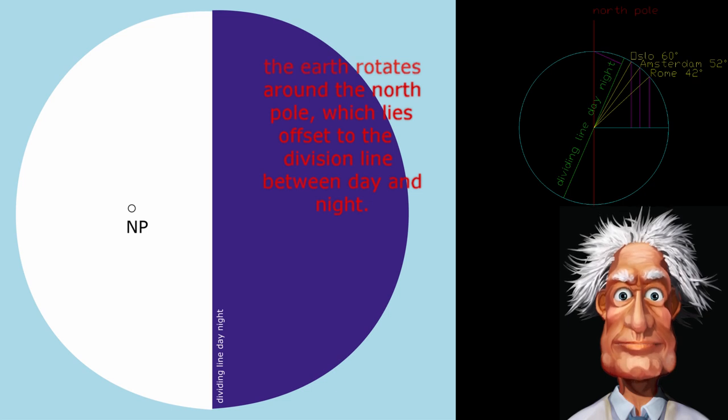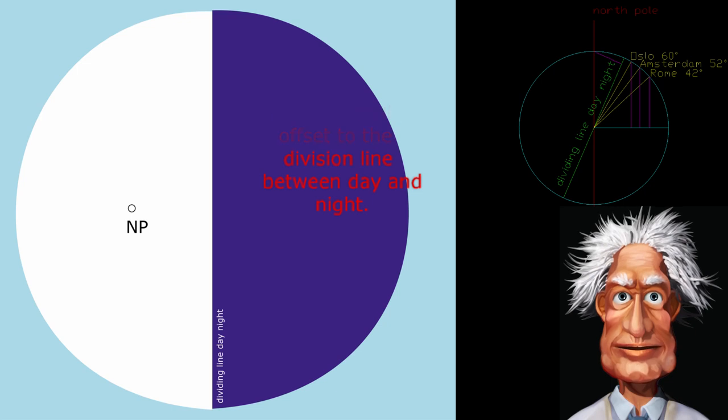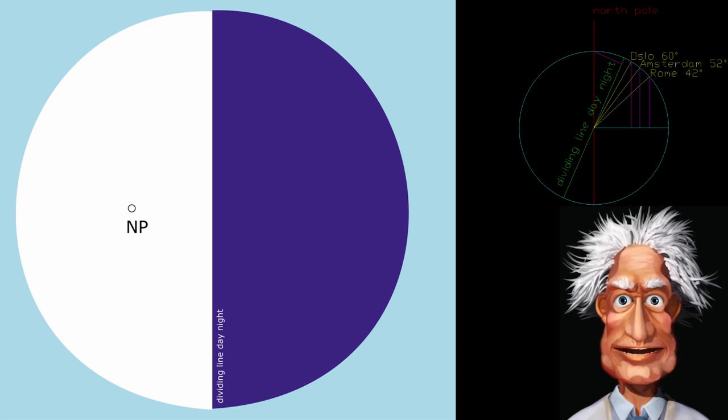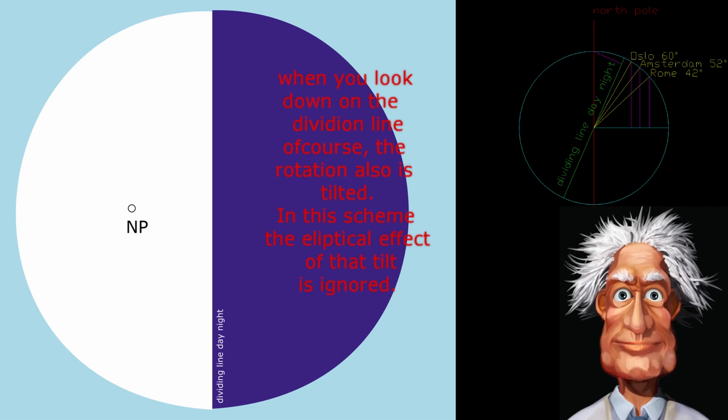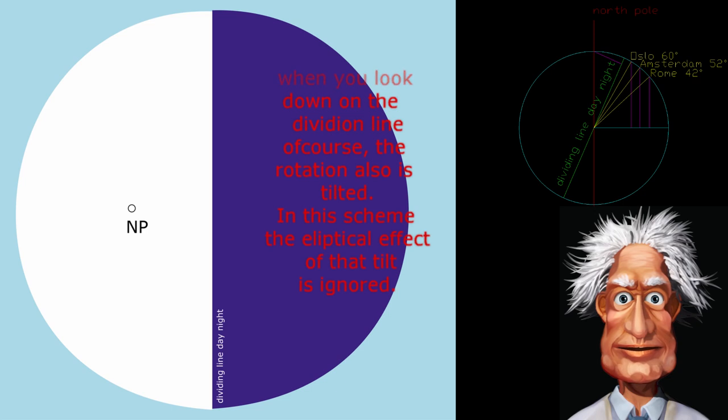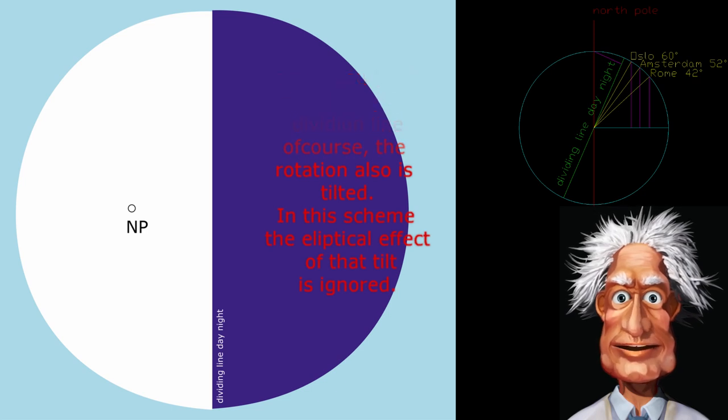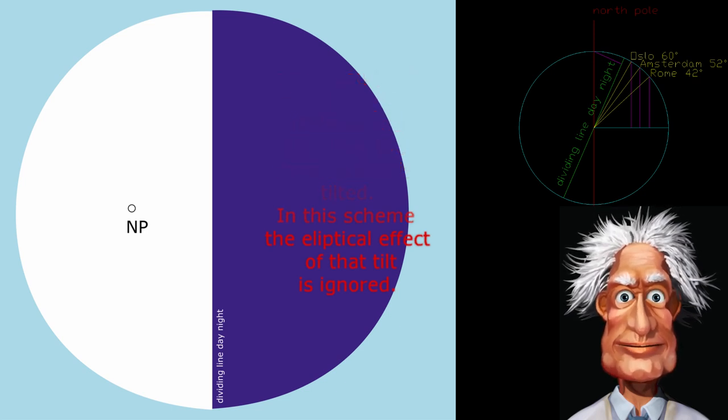You see the division between daytime and nighttime on the earth globally that's 50-50, but due to the axial tilt of 24 degrees you get a different division dependent on the place on the earth.